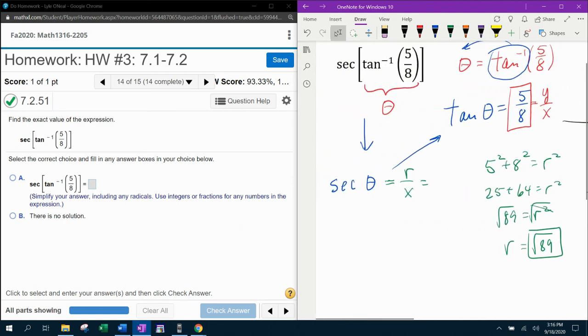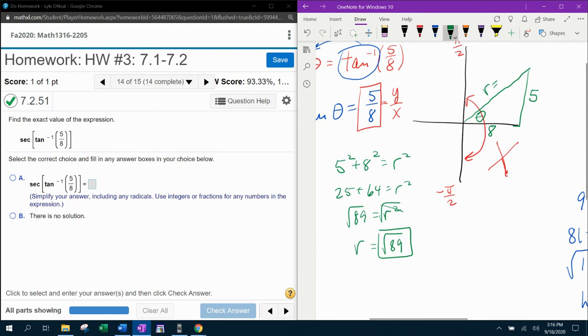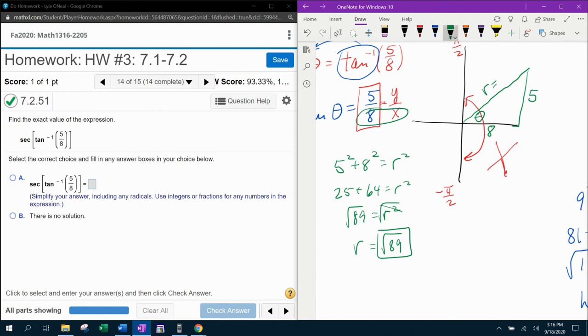And that means that I now have my answer. Remember, we're looking for secant theta, originally secant r, which is square root of 89, over x, which is 8.